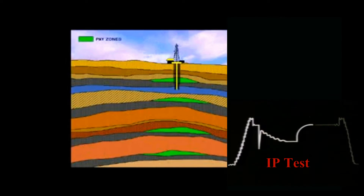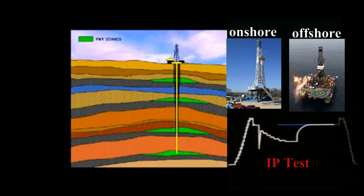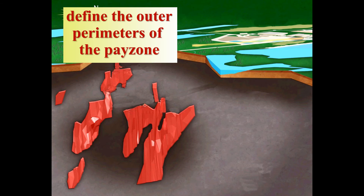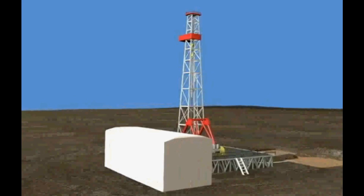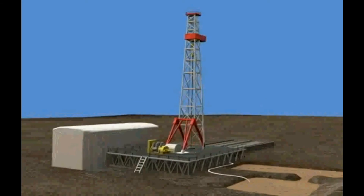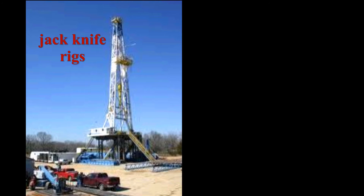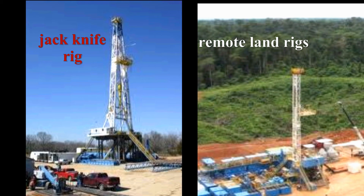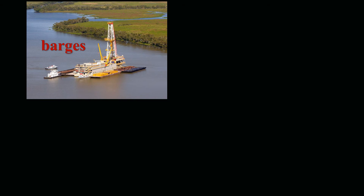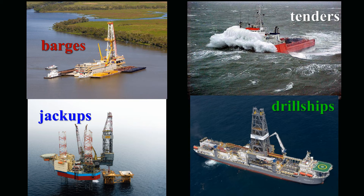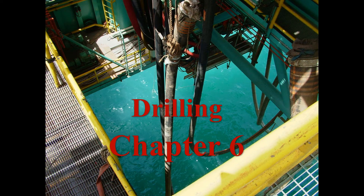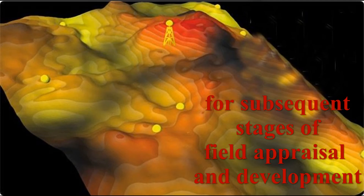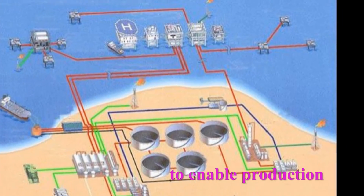After the IP test for either onshore or offshore wildcat wells, the exploration team endeavors to define the outer perimeters of the pay zone. In most cases, equipment used to drill the wildcat well will be used in the initial stages of field appraisal. This means that jackknife rigs and remote rigs will continue to be used in land operations, while barges, tenders, jackups, drill ships, etc. will be used offshore. For a full description of these rig types, please see Chapter 6. For subsequent stages of field appraisal and development, additional equipment will be brought on-site to enable production.